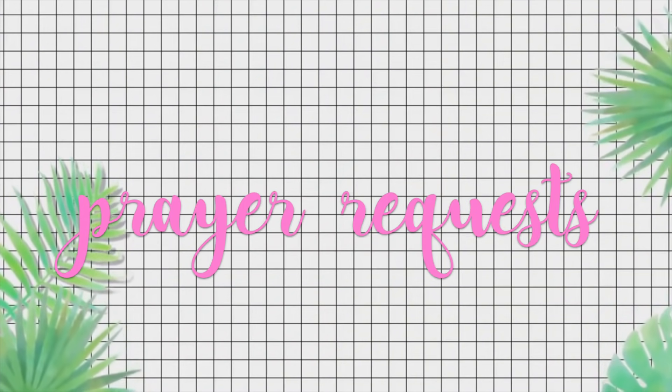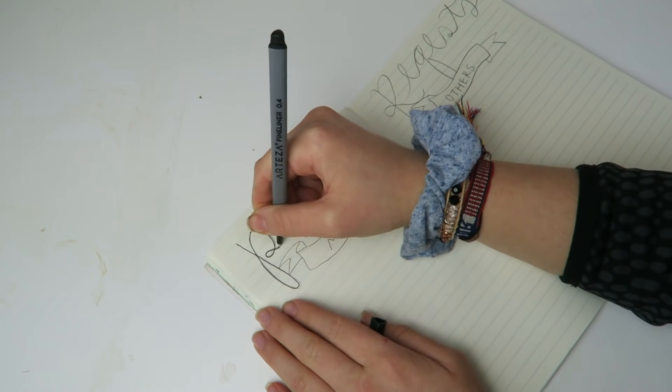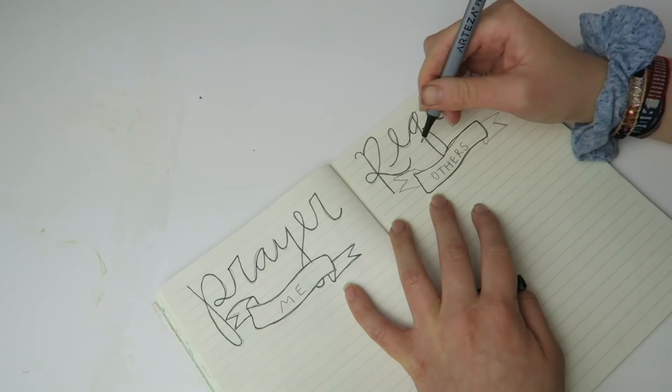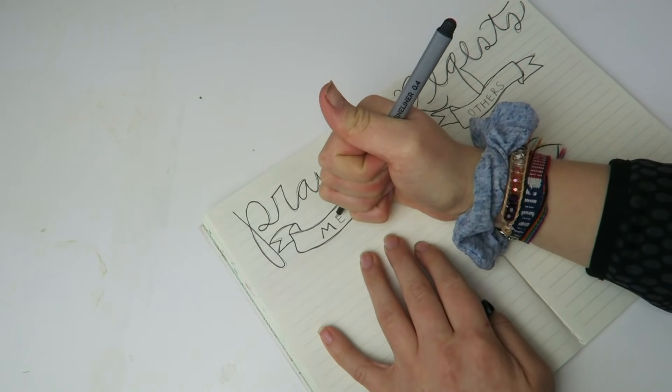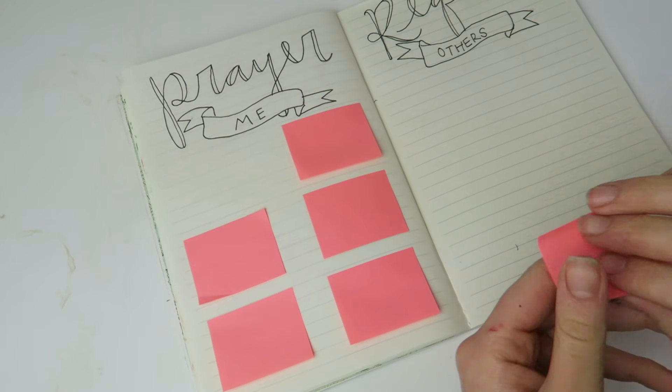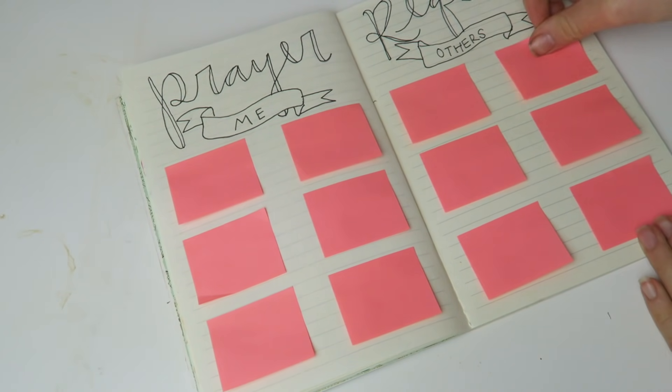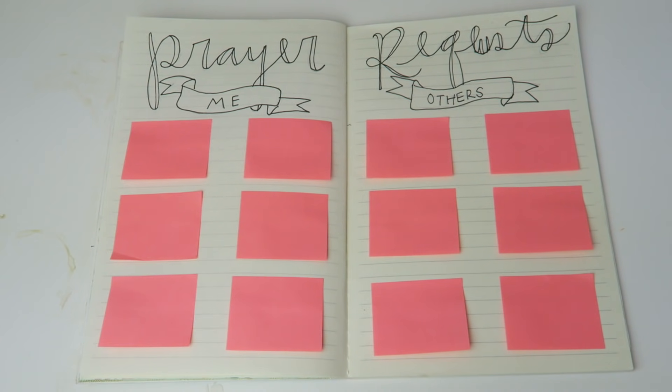The next section I have is prayer requests. Now, I know I have a prayer journal, but I like having the prayer request section in my bullet journal because I get a lot of prayer requests. And it's just nice to have them all in this one area to be able to pray for them and not forget.